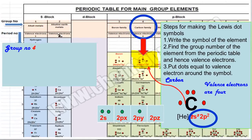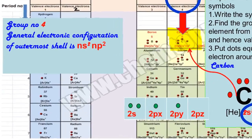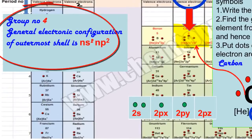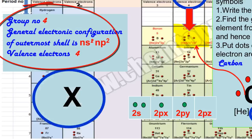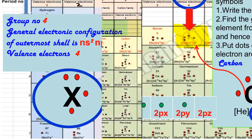All group 4A elements have a general electronic configuration of ns² and np². They all have four valence electrons — two electrons are paired and two electrons are unpaired. So around the symbol of the element X, where X can be the symbol of any element from group 4A, two electrons will appear as a pair and two electrons will be placed around the symbol as unpaired electrons. This is the general Lewis dot symbol of all group 4A elements in their ground state.